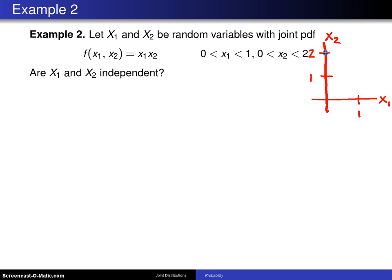The support for the random variables x1 and x2 is this rectangle. Because it is a rectangular region, a product space, there is a chance that x1 and x2 will be independent random variables.